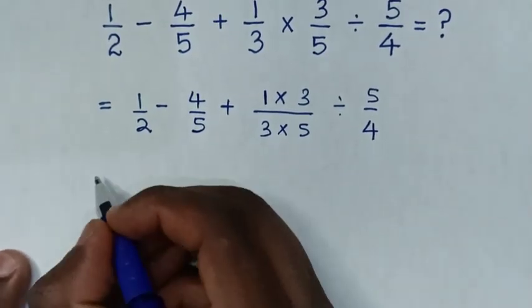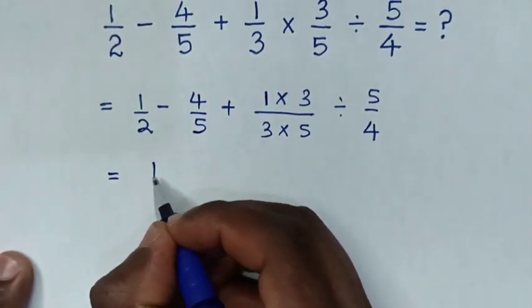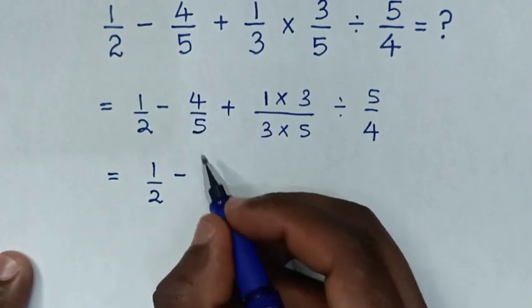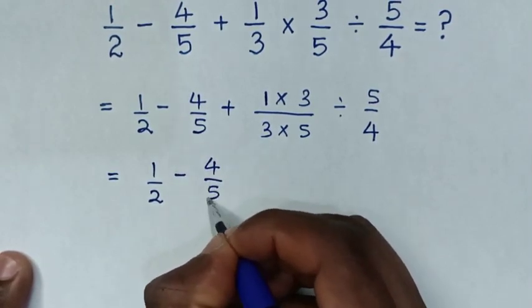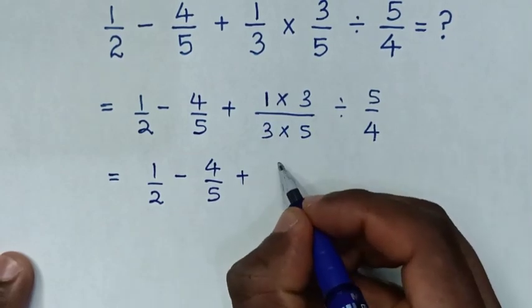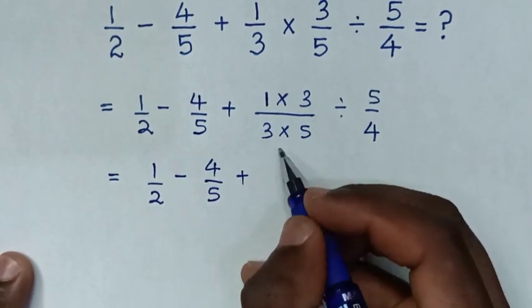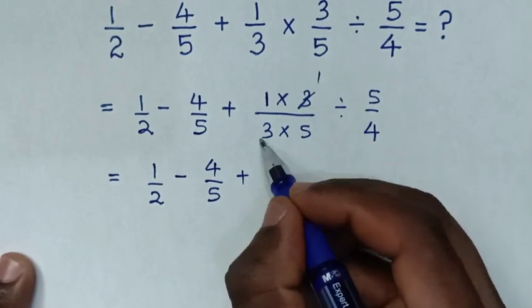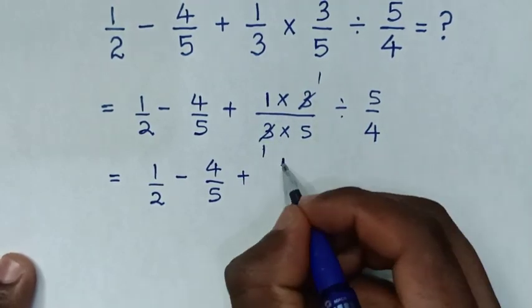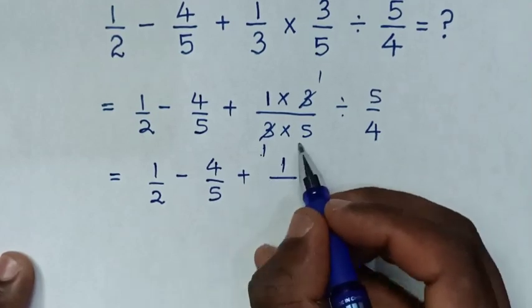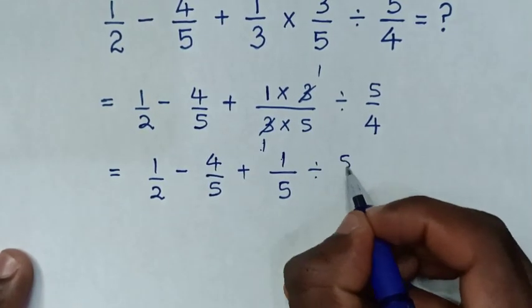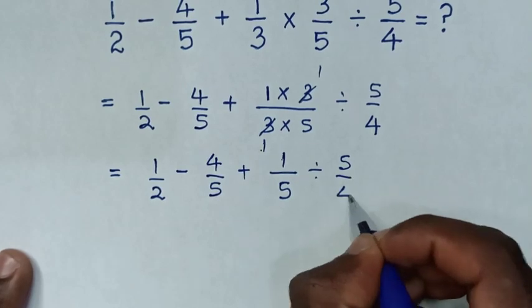Then in the next step, it will be equal to 1 over 2, then minus 4 over 5, then plus 1 times 3 is 3. But we can simplify, so this 3 will cancel by 1 and this by 1. So 1 times 1 is 1, then over 1 times 5 is 5, then divide by 5 over 4.